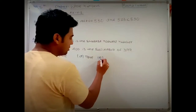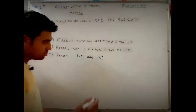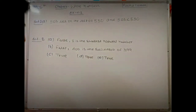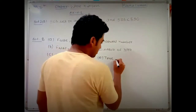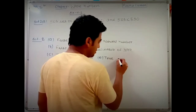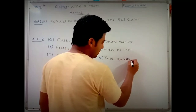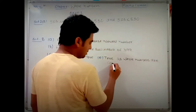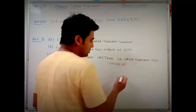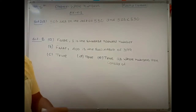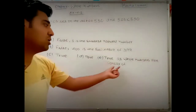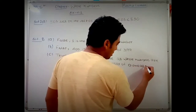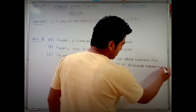The reason part e is true is that whole numbers comprise zero and all natural numbers. Since natural numbers are included within the set of whole numbers, all natural numbers are indeed whole numbers.